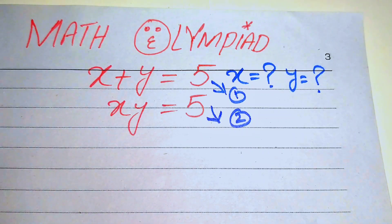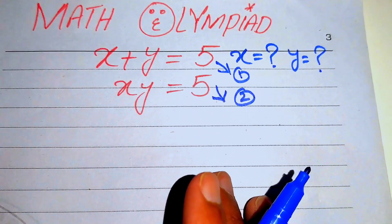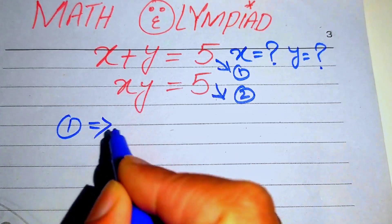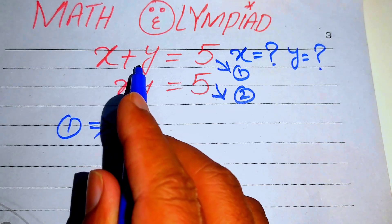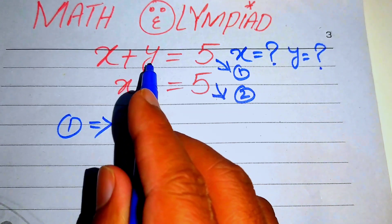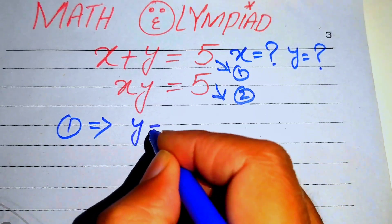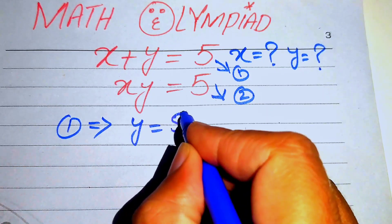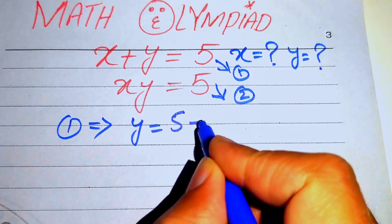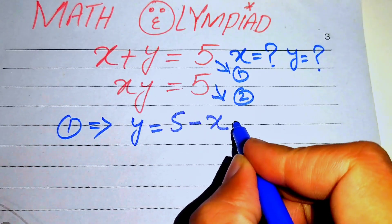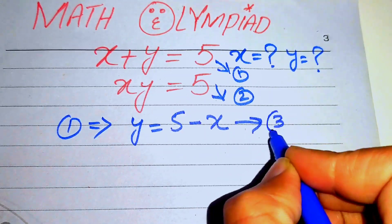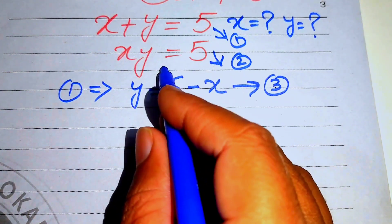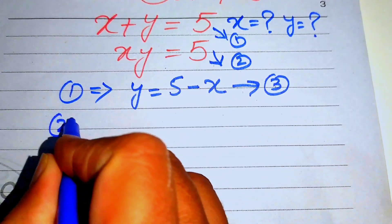We have these two equations. First we apply equation number one to find the value of y. We move x to the right-hand side and it becomes y equals 5 minus x. We call this equation number three. Now we substitute this value of y into equation number two.